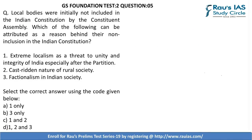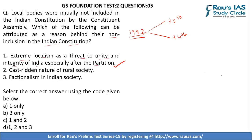Question 5 asks us the reasons why local bodies were initially not part of the Indian Constitution. We know that local self-governing bodies were added to the Indian Constitution in 1992 via the 73rd and 74th Amendment Acts; hence, they were not part of the original Indian Constitution of 1949. The first statement reads: extreme localism as a threat to unity and integrity of India, especially after partition. This statement is correct because after partition, many areas in the country were under severe turmoil.